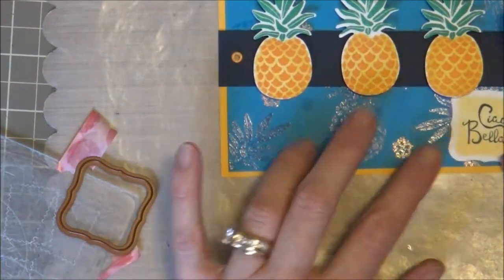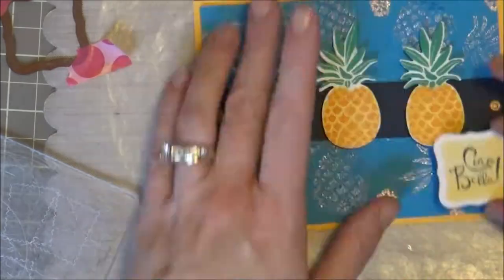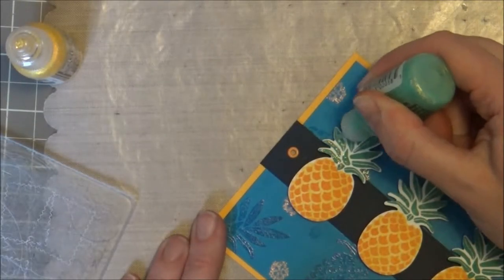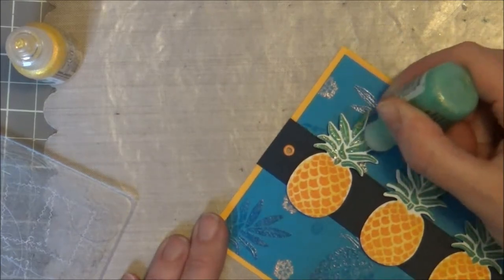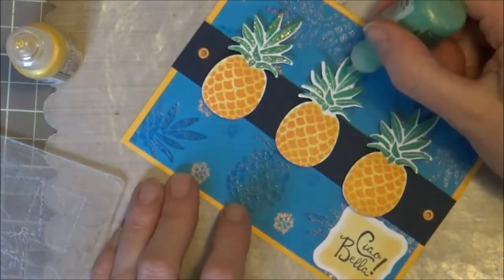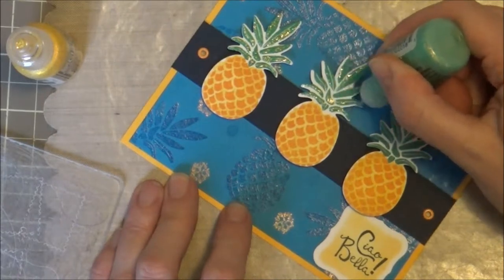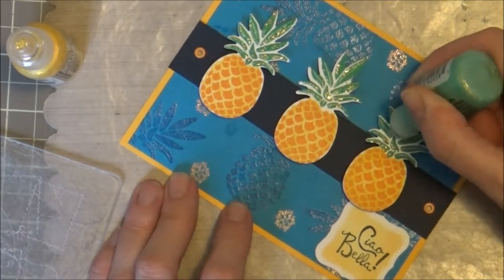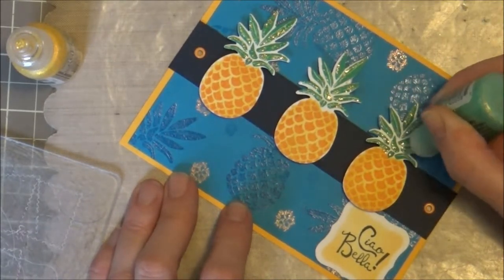Just kind of put that on the card. Again, I'm using my ATG gun to add adhesive to the back of that sentiment. No card would be complete without a little bit of Stickles, so I'm using Eucalyptus on the top portion of the pineapple and then a little bit of yellow Stickles on the body.